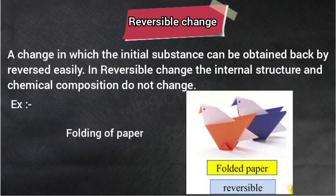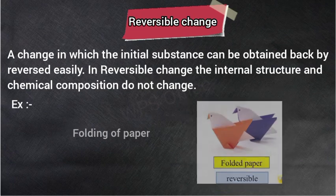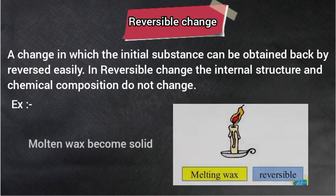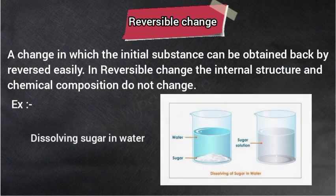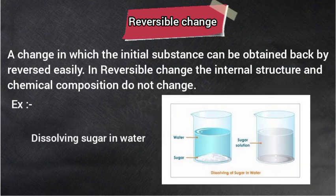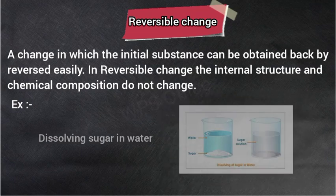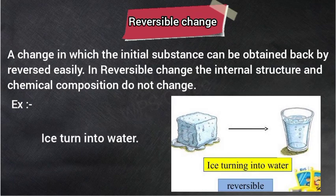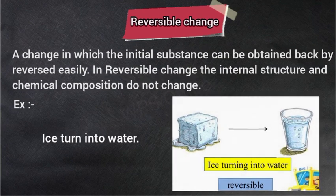For example: folding of paper — कागज को मोड़ने से कागज में कोई परिवर्तन नहीं होता, सिर्फ उसका आकार बदल जाता है. Molten wax becomes solid — पिघला हुआ मोम फिर से solid बन सकता है. Dissolving sugar in water — पानी में चीनी घोलने से, फिर से हम चीनी को पानी सुखाकर प्राप्त कर सकते हैं. Ice turns into water — बर्फ पानी में बदल जाती है, और फिर अगर उसे फ्रिज में डाल दें तो वो फिर से बर्फ के रूप में प्राप्त हो सकती है.